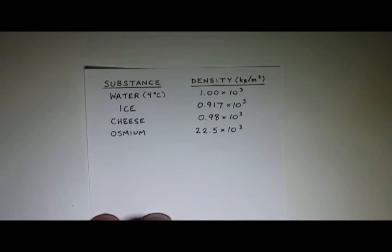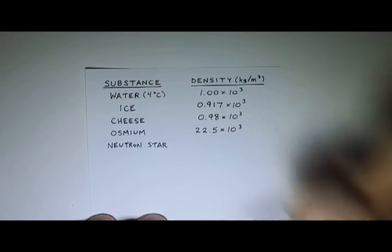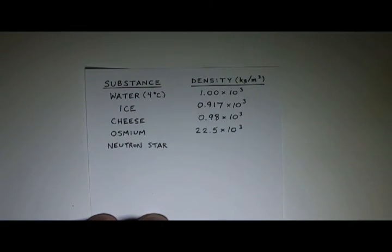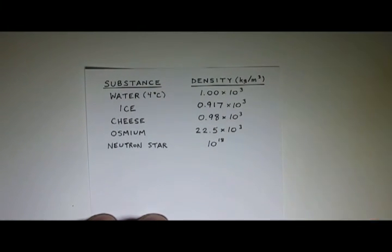So what about not just on Earth, but something that's really, really dense? How about a neutron star? So something that we wouldn't have here on Earth. But a neutron star has a density of about 10 to the 18th kilograms per cubic meter. That's pretty dense.